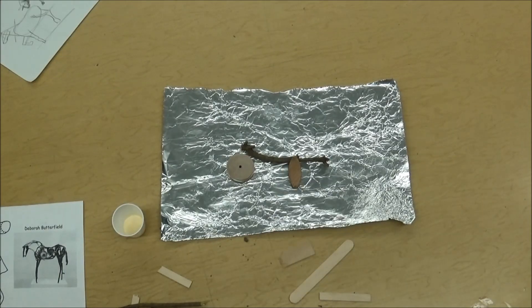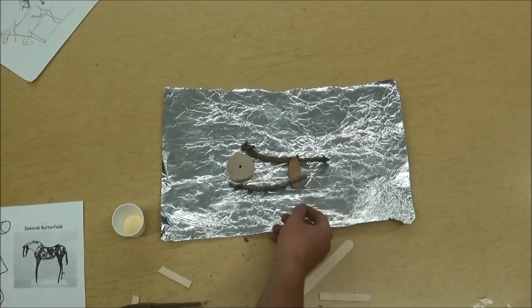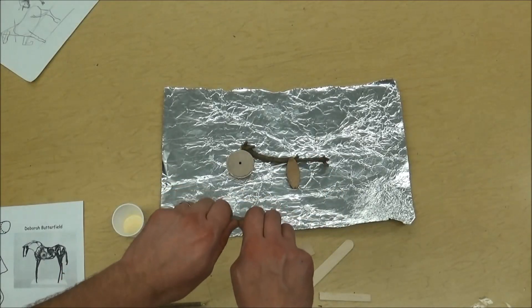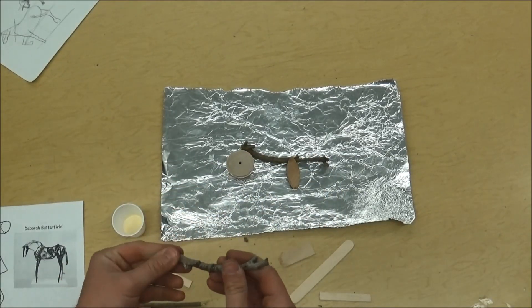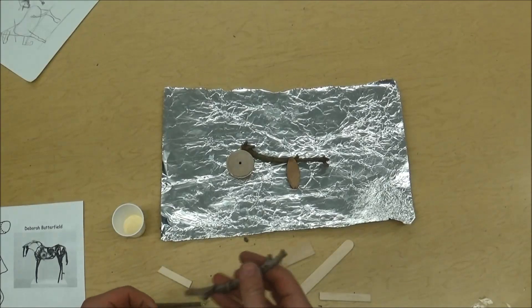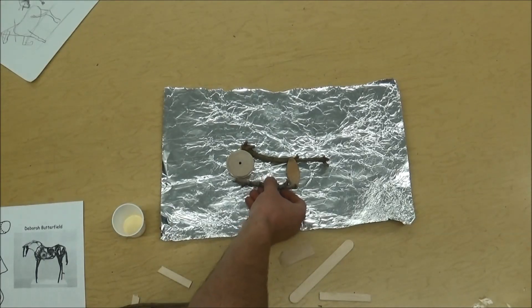So maybe there's the rump. And then this could be the belly. It's a little long. So I could break that part. If you can't, don't worry about it. Just try to find the pieces that work. This is kind of how Deborah Butterfield works.